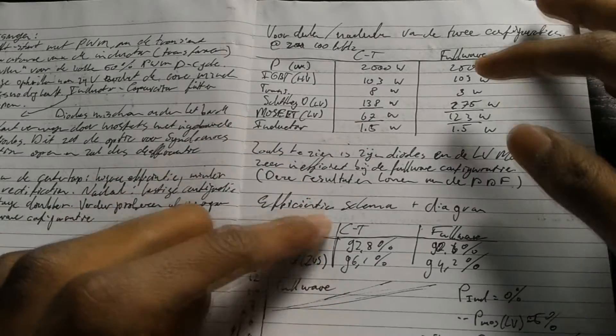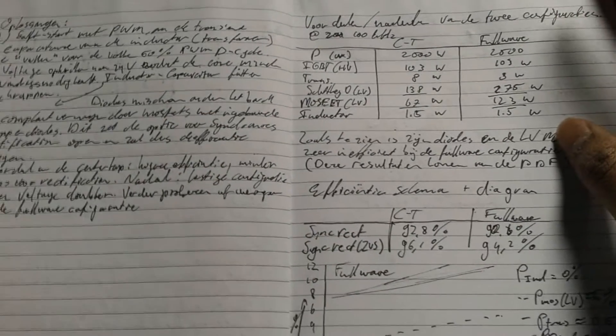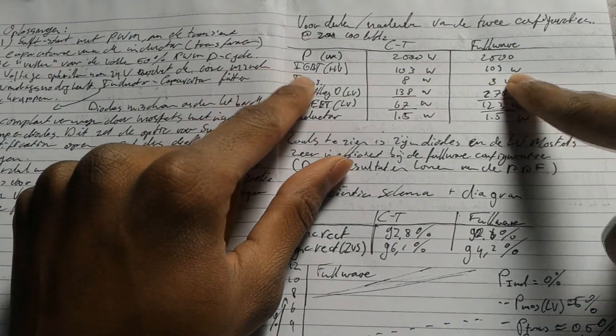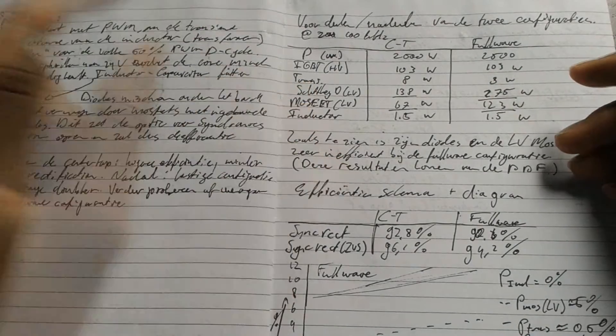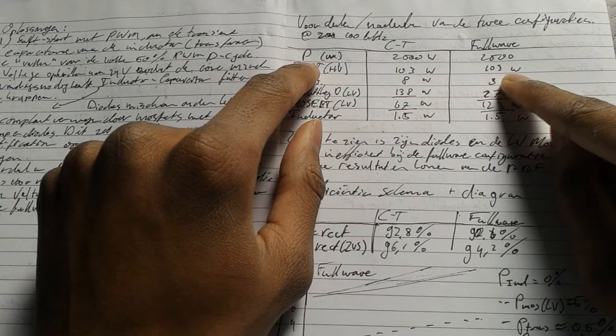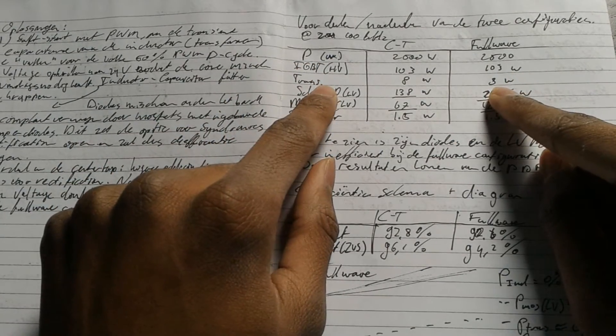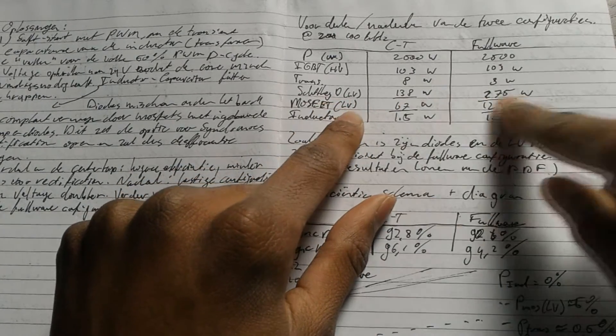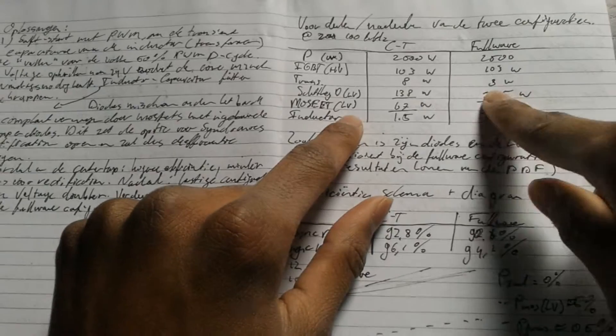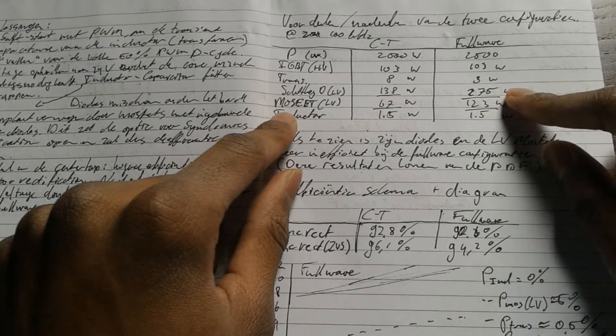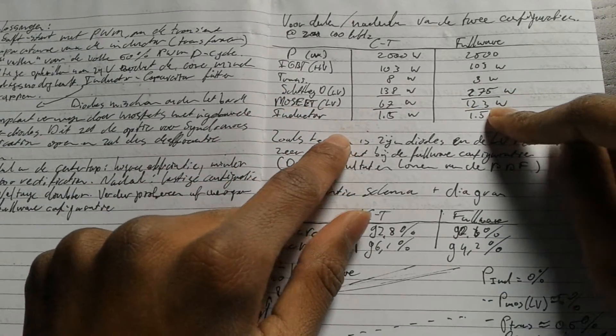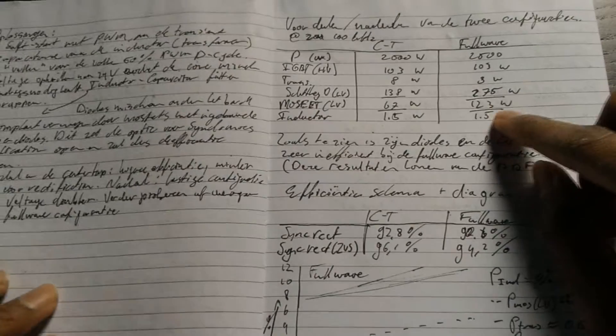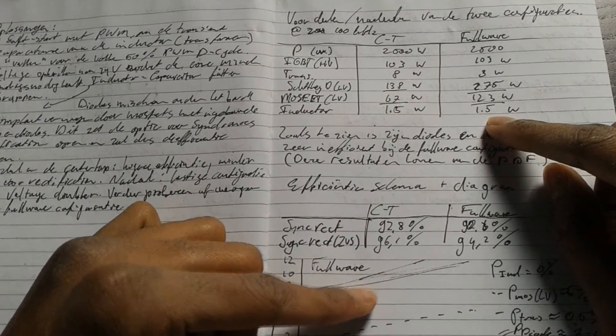If you take a look at what causes the losses of our design and what is the inefficient part of the topology, we can see the high voltage for rectification. If you use an IGBT for rectification, it is about 103 watts in power loss. The transformer is about 8 watts, that is not much. If we use a Schottky diode in the low voltage side, we get almost 300 watts of power loss, that's huge. The MOSFETs on the low side, the switching MOSFETs, create almost 123 watts of power loss and the inductor 1.5 watts, which is almost nothing.